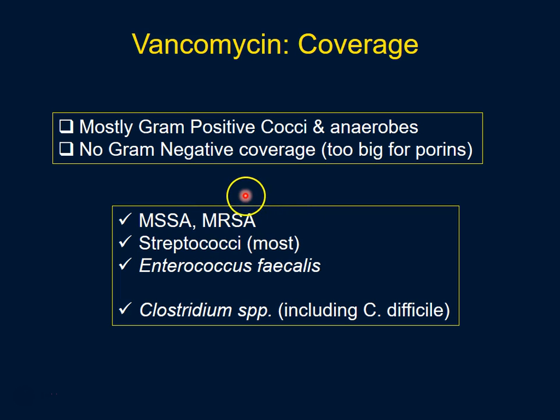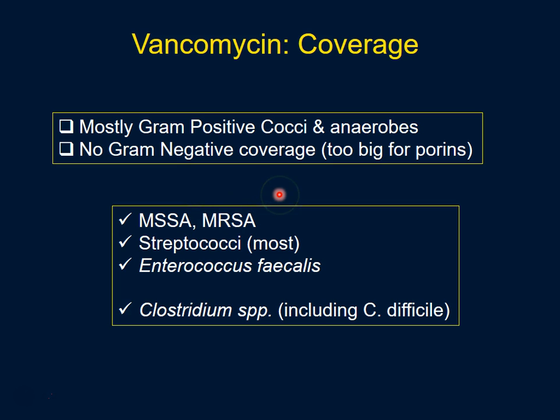Vancomycin is very effective against MRSA, methicillin-resistant Staphylococcus aureus. MRSA arises because the penicillin-binding protein has changed, preventing beta-lactams from entering the active site and causing covalent modification. Vancomycin has an entirely different mechanism of action, so it retains good activity against MRSA.